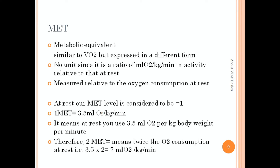At rest our MET level is considered to be equal to one. So one MET is exactly equivalent to 3.5 ml O2 per kg per minute. It means that when you are at rest you use 3.5 ml of oxygen per kg body weight per minute. Therefore 2 MET is equal to twice the oxygen consumption at rest, that is 3.5 multiplied by 2, which is equivalent to 7 ml O2 per kg per minute.